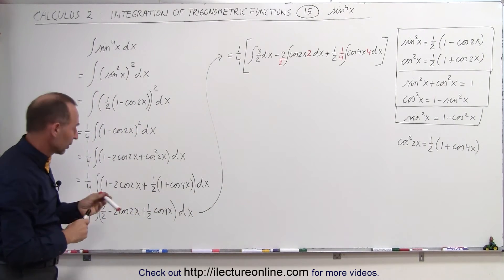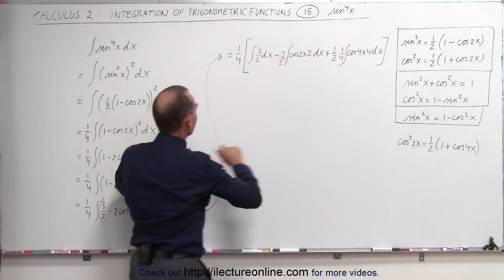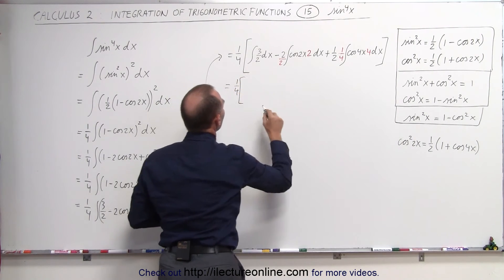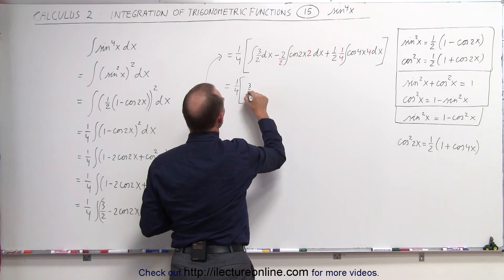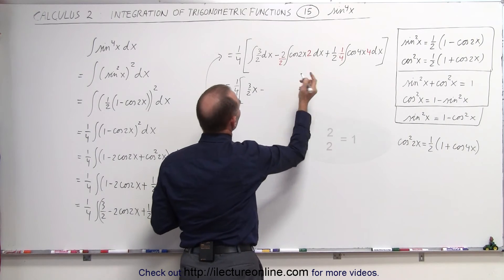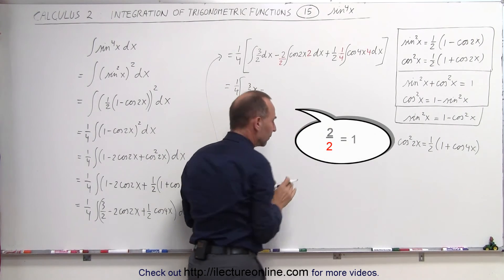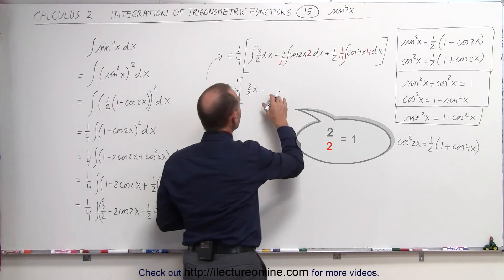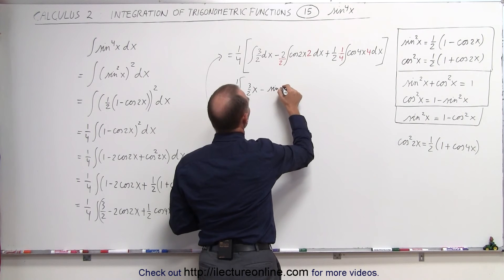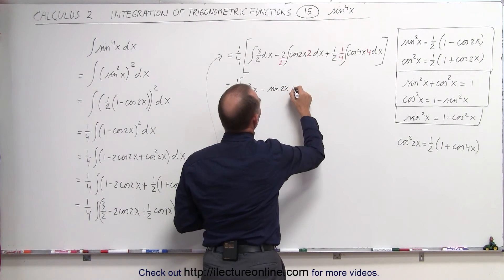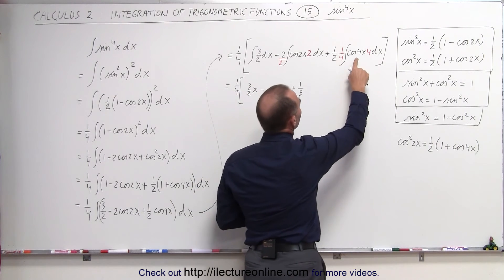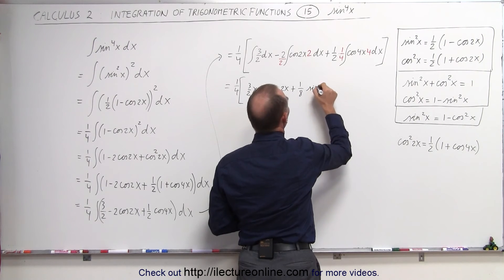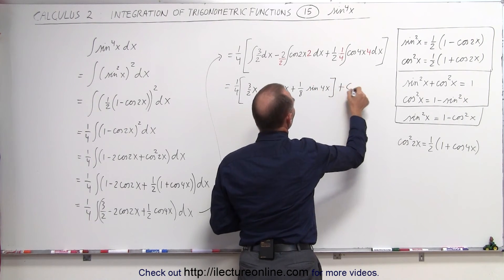Now we're ready to integrate all three integrals. The integral of dx is x, so we get three over 2 times x. Then 2 divided by 2 is 1 — the integral of cosine is sine — so we get minus sine of 2x. And here plus one eighth, and the integral of cosine of 4x gives us sine of 4x, plus a constant of integration.